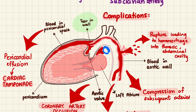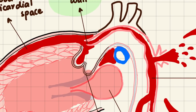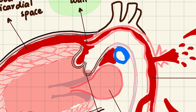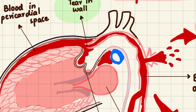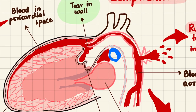As I said, aortic dissection occurs because of a tear in the wall of the aorta. Here I've shown a tear, and in this case the tear in the vessel wall will cause blood to flow through abnormal channels within the vessel wall — chiefly between the intima and the media. This abnormal pathway is what aortic dissection is.